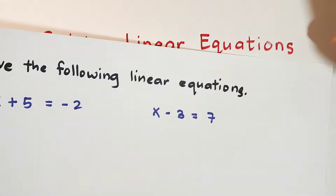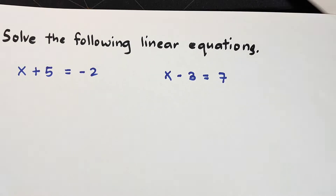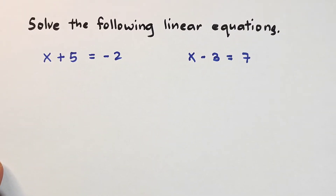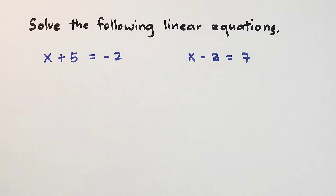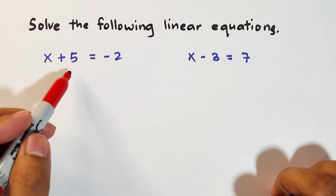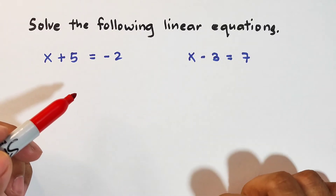So what I have here are the first two examples for today's video: solve the following linear equations. In your school, you will be asked to solve these equations in a step-by-step process using properties of equality. Let's start with example number one: x plus 5 is equal to negative 2.